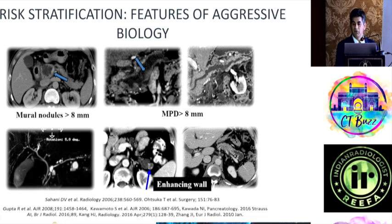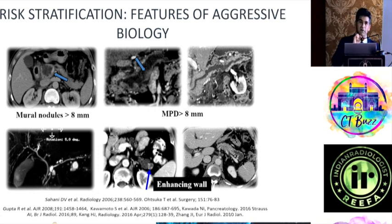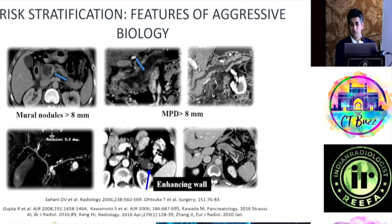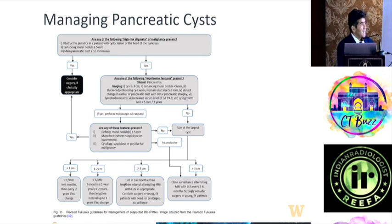In main duct IPMN, the concern is not just duct dilatation but tumor implants within the duct, which must be identified. Surgeons don't perform total pancreatectomy — they preserve some pancreas — so identifying tumor foci determines the resection extent. They may do a Whipple procedure, cut the pancreas, perform frozen section, and if negative, leave it. Since tiny foci can't always be identified on imaging, surgeons may pass a pediatric endoscope within the pancreatic duct to look for tumor foci. Enhancing wall is also a bad sign.